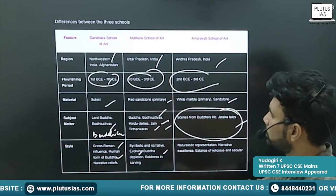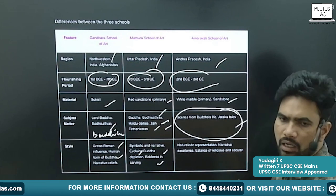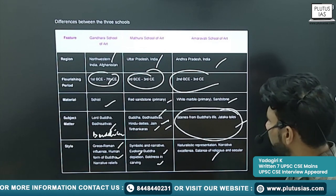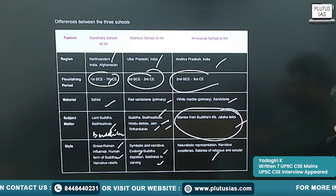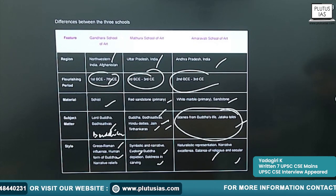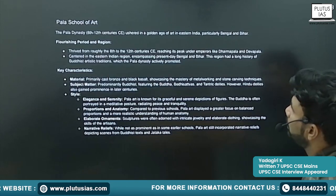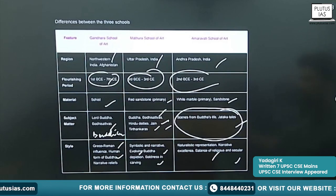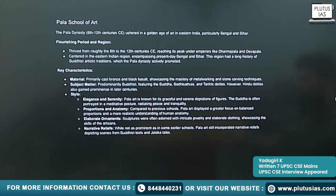Style: Gandhara — Greco-Roman influence and human form of Buddha. Mathura School — symbolic and narrative styles, evolving Buddha depiction, boldness in carving. Amaravati School — naturalistic representation, narrative excellence, and balance of religious and secular sculpture. These are the major differences in the three schools of art.